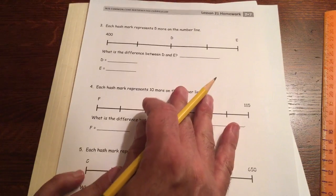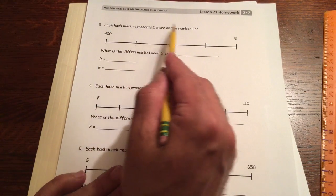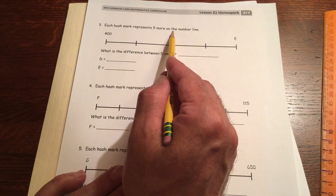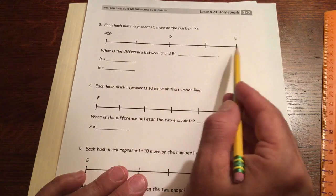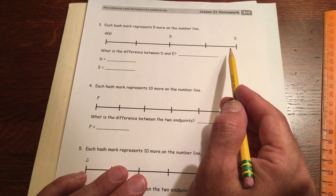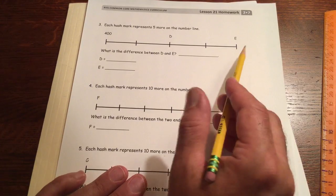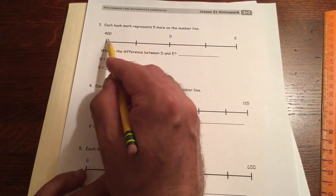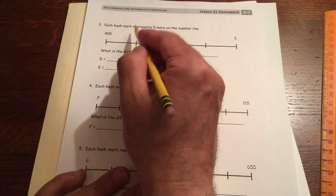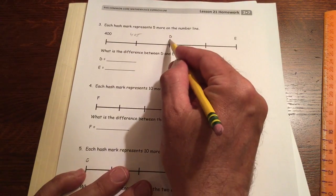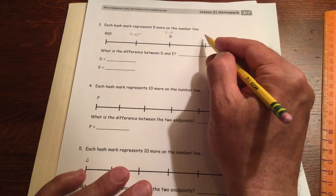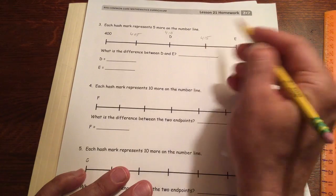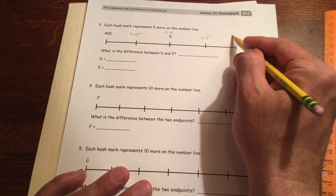And we have a few more of these number line puzzles. Each hash mark represents five more on the number line. So for this number line, we're counting by fives. And we don't know what the units are, but we know we're counting by five. So this is 400, this is five more, 405. And that means D has to be 410. And then this one here is 415. And then this is 420.